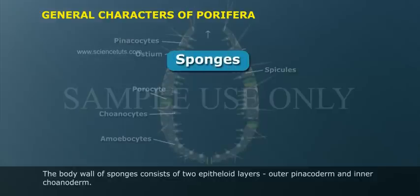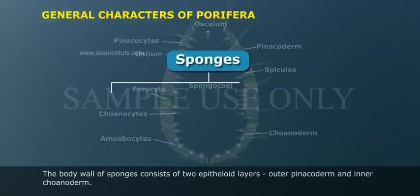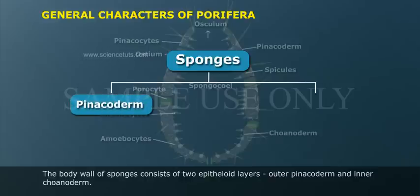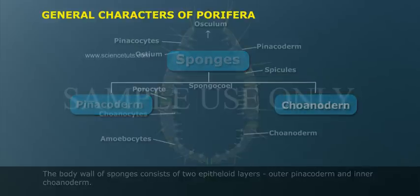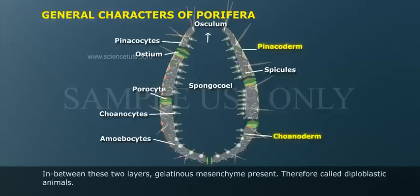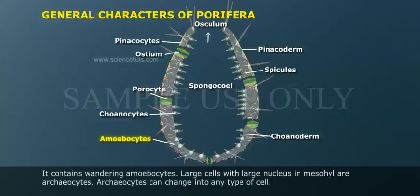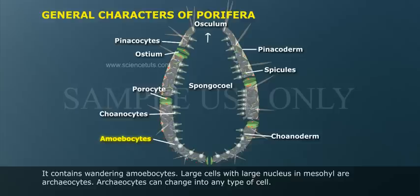The body wall of sponges consists of two epitheloid layers: the outer pinacoderm and the inner choanoderm. In between these two layers, a gelatinous mesenchyme is present, making them diploblastic animals. The mesenchyme contains wandering amoebocytes. Large cells with large nuclei in the mesohyle are called archaeocytes.